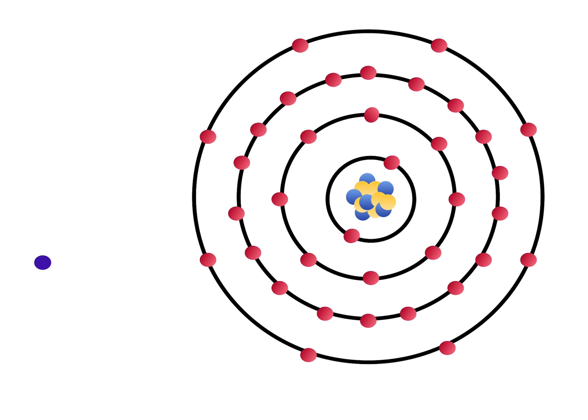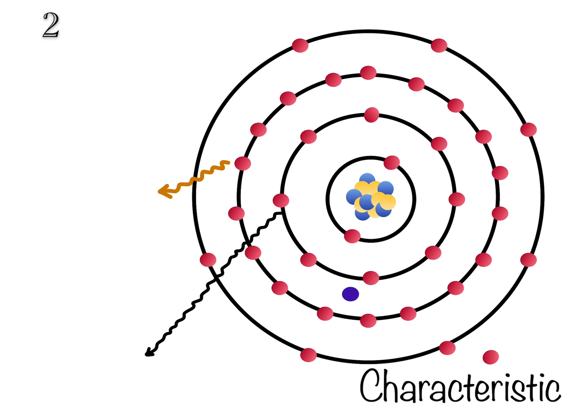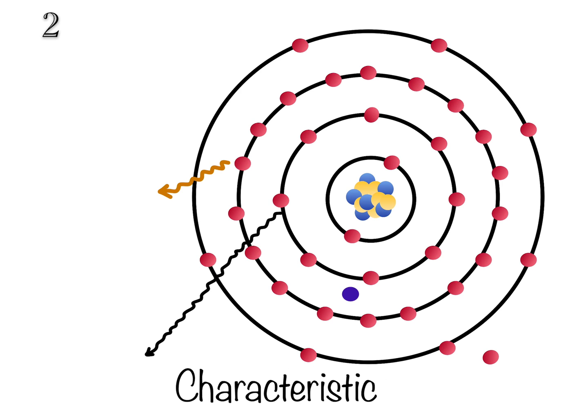Also when an incoming electron collides with inner shell tungsten electron displacing it from the atom, the outer shell electrons drop into the inner shells with large loss of energy in the form of heat and subsequent emission of X-rays takes place. This is called characteristic radiation.